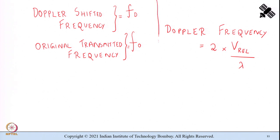The Doppler frequency can be written as 2 × (relative velocity / lambda). A factor of 2 has been added because the signal is Doppler shifted twice — once on transmission and once on reception — and hence a factor of 2 appears in the expression for Doppler frequency.